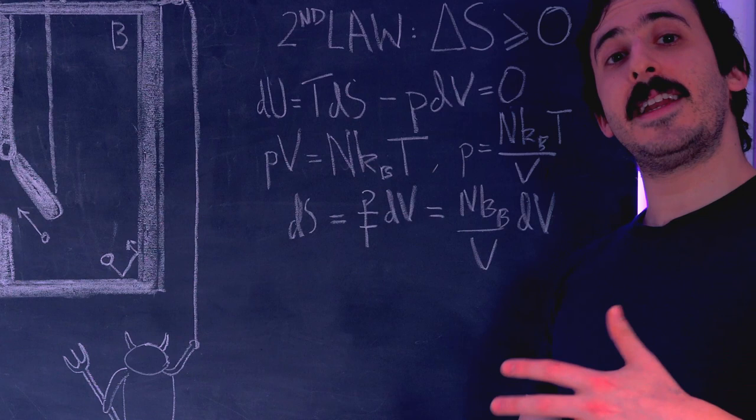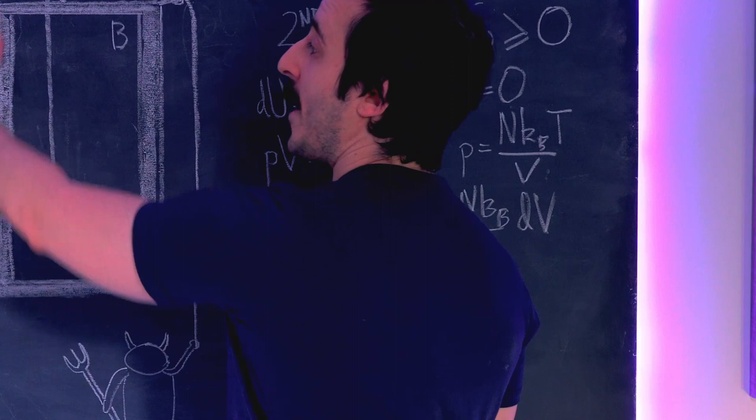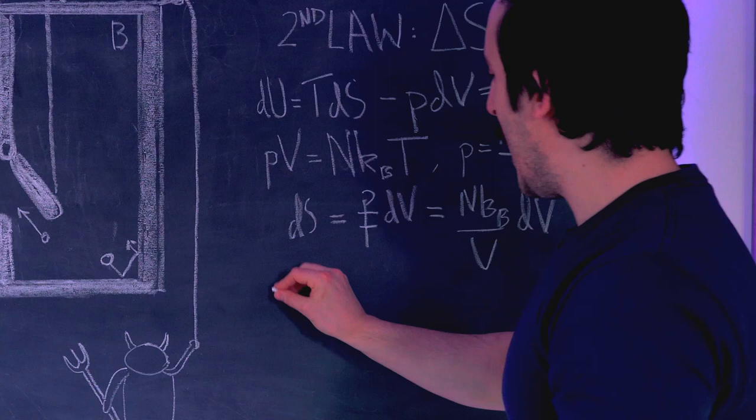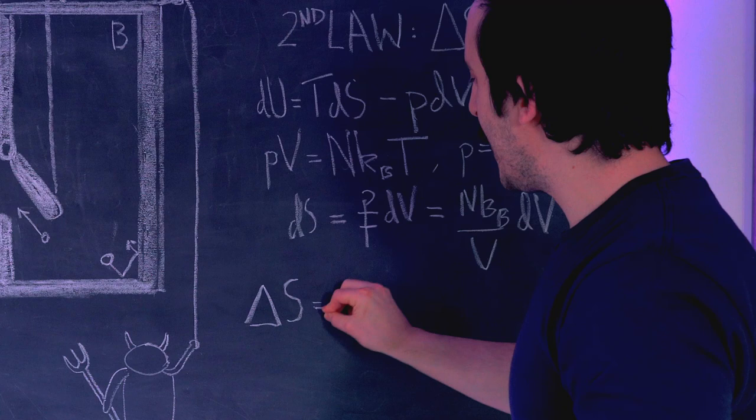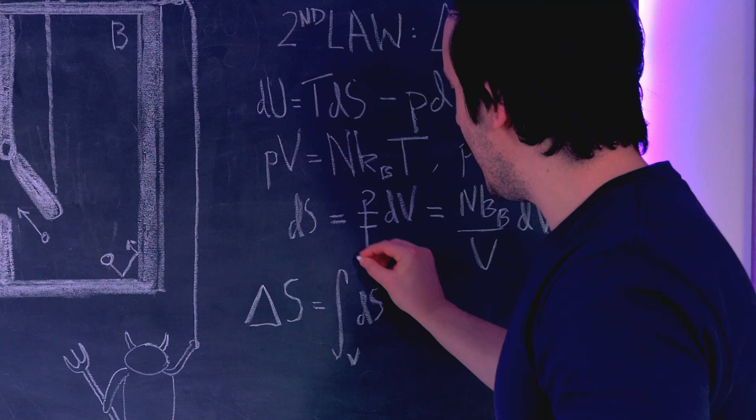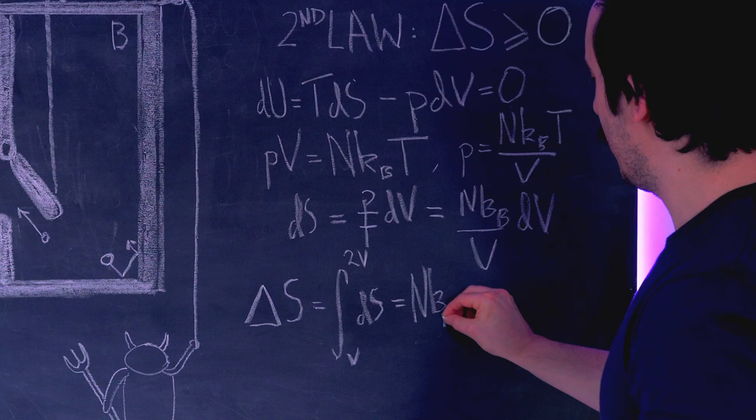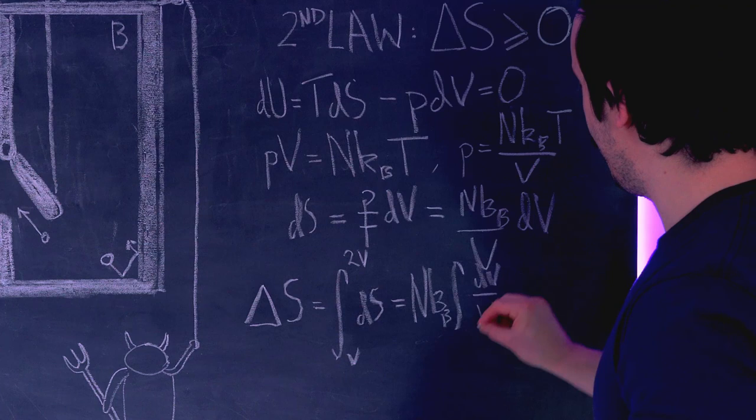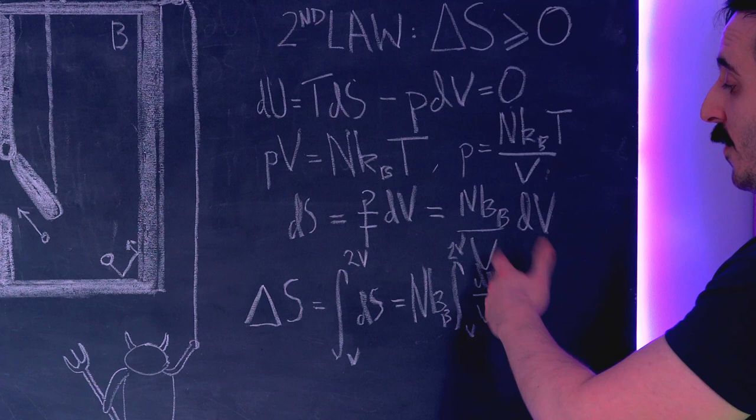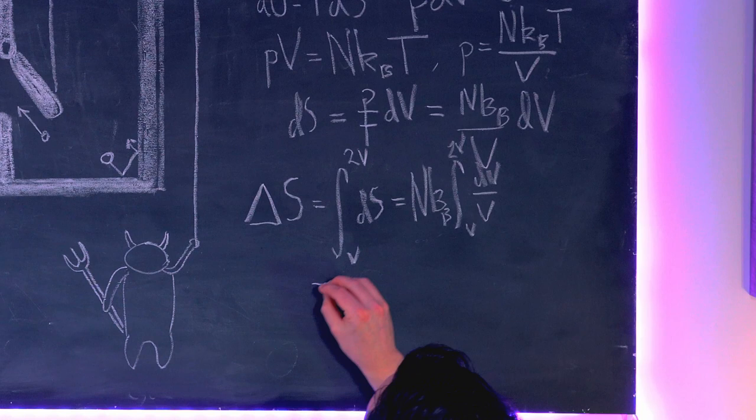What we want to do is calculate the change in entropy when our gas goes from one volume V in chamber A to a volume of 2V in chambers A plus B. So we have the change in entropy, which I write as delta S, that's equal to the integral of dS going from volume V to 2V. Now we're going to sub in dS from here. Bringing out the n kb constant to the front, we have the integral of dV over V from V to 2V. Hopefully you know that the integral of one over V with respect to V is ln V. So here we have this is equal to n kb ln of V between V and 2V.